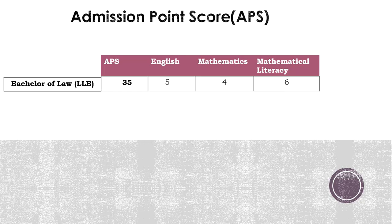APS stands for Admission Point Score. In addition to subject requirements, universities also have an APS score requirement. For example, this university requires a code 5 for English, a code 4 for Mathematics, or a code 6 for Maths Literacy in order to get admission into the Bachelor of Law LLB degree, but they also require a 35-point APS score. This video will look at how to calculate this APS score.